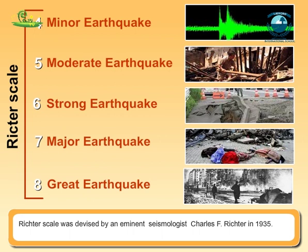The Richter scale has neither a fixed maximum nor minimum, but earthquakes rated as high as 8.4 on the Richter scale have been measured so far. The smallest magnitude of 2 on the Richter scale may be normally detected by humans. An increase of 2 in the magnitude means a thousand times more destructive energy.